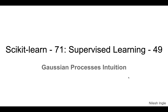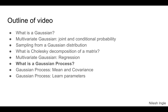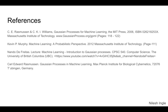Hello and welcome to Learn Data. I'm Nilesh and in this video we'll talk about the intuition behind Gaussian processes. The topics we'll cover are: what is Gaussian, multivariate Gaussian, sampling, Cholesky decomposition, and how important the covariance and mean are in Gaussian processes. The main reference this video draws on is a lecture by Nando de Freitas on introduction to Gaussian processes, along with references by Rasmussen and page 111 from Kevin Murphy's book 'Machine Learning: A Probabilistic Perspective'.